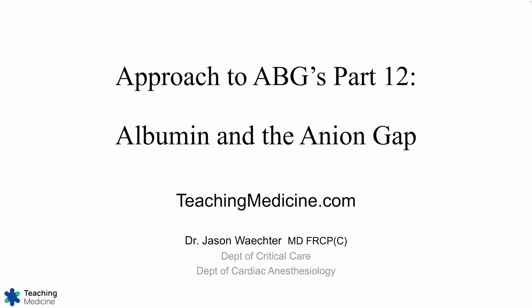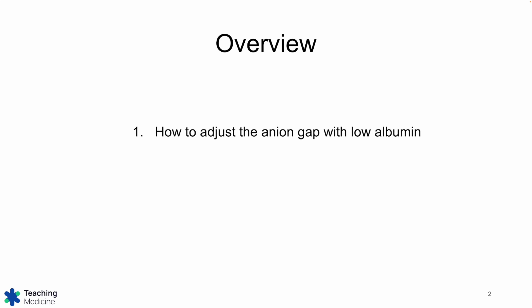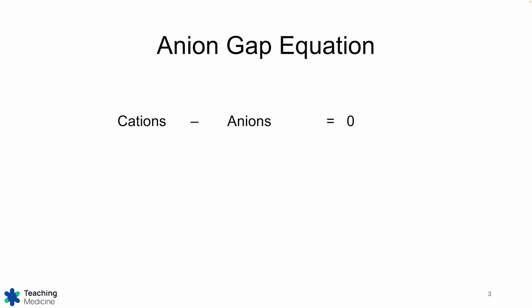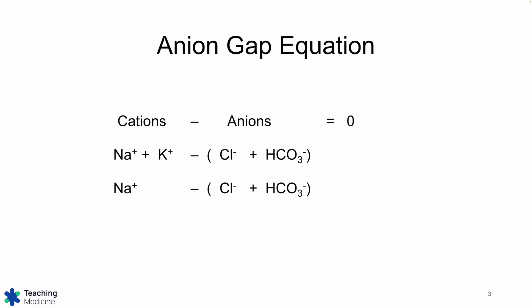Welcome to Approach to ABGs Part 12: Albumin and the Anion Gap. We're going to quickly go through how to adjust the anion gap when there is a low albumin. Just a reminder: the anion gap is the difference between cations and anions. We've simplified it so that we're really only looking at one cation and two anions, and the normal value is 12.